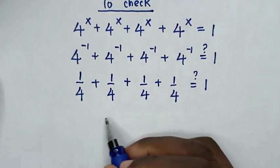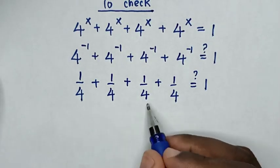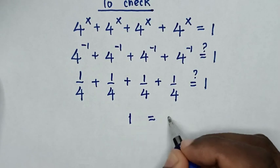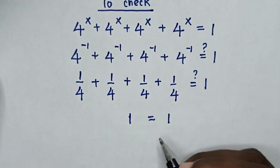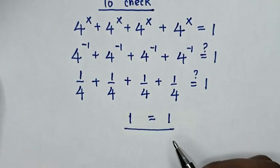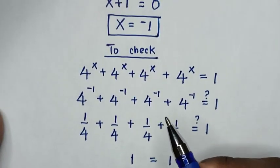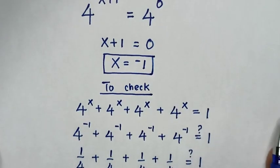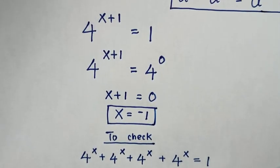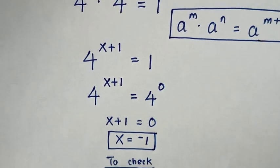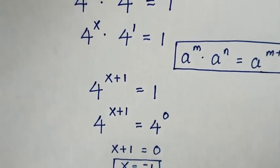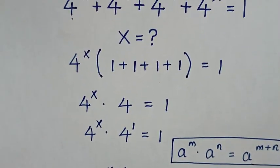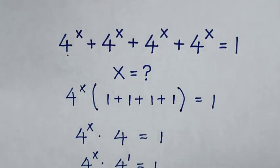A quarter plus a quarter plus a quarter plus a quarter is a whole, which is 1, is equal to 1. Therefore, the left side and right side are equal, so it's confirmed that x is equal to negative 1. Thank you for watching — don't forget these steps, subscribe to my channel, and see you in the next video. Bye bye!